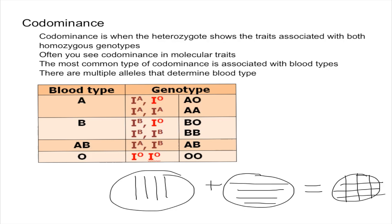It's when both alleles are expressed. However, it's important to remember that you often see codominance in molecular traits. The most common example is blood, so let's talk about that.